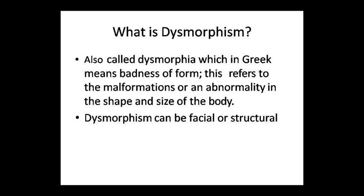Dysmorphism comes from a Greek word which means 'badness of form' — the form is broken. This refers to the malformation or an abnormality in the shape and size of the body.